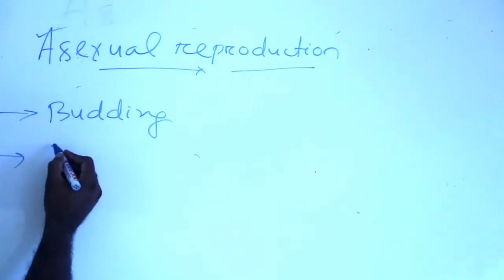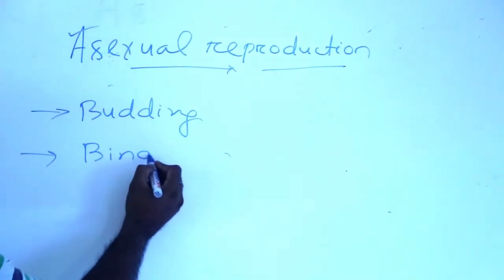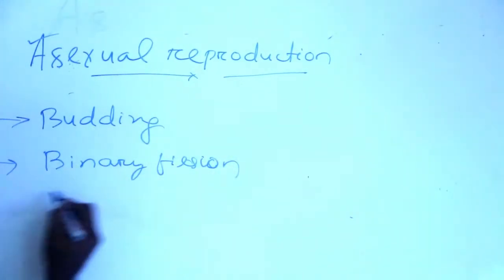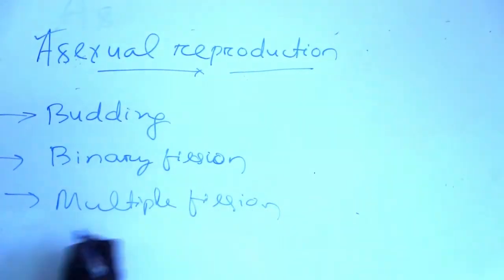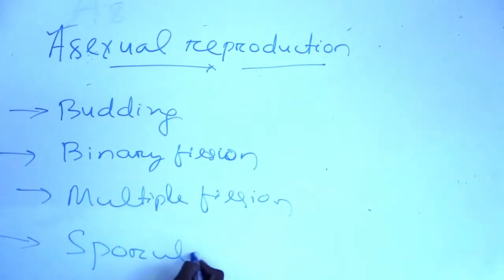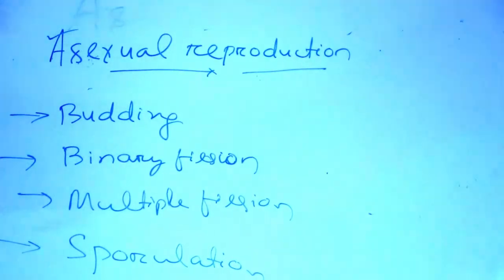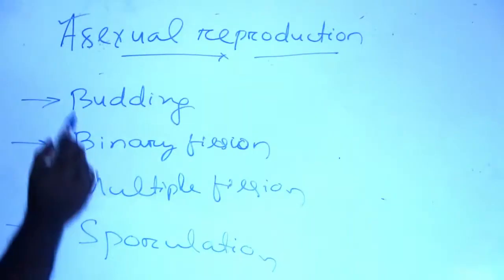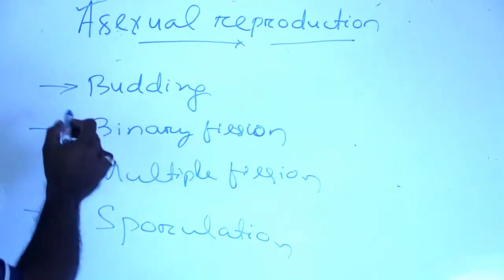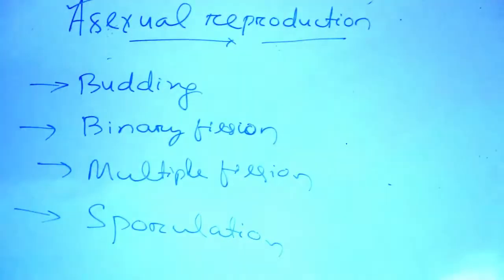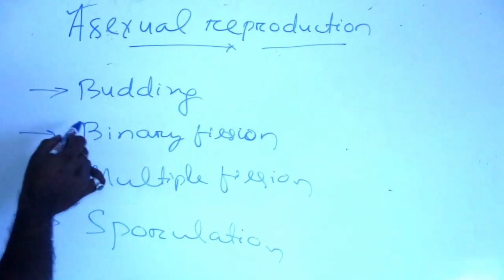Asexual reproduction in organisms is completed by different methods: number one, budding; number two, binary fission; number three, multiple fission; and sporulation. Asexual reproduction is one type of reproduction in which only one parent is involved, and lower groups of plants and animals perform it by these different methods.